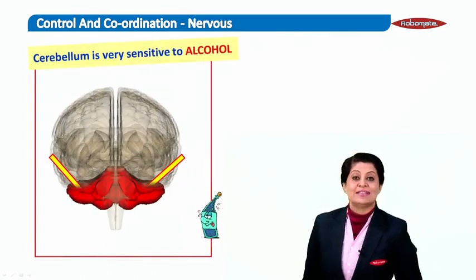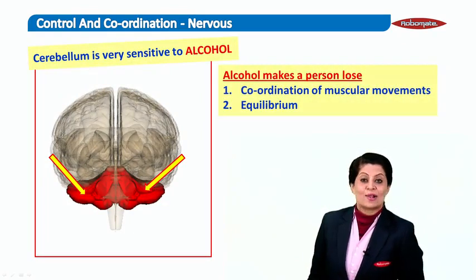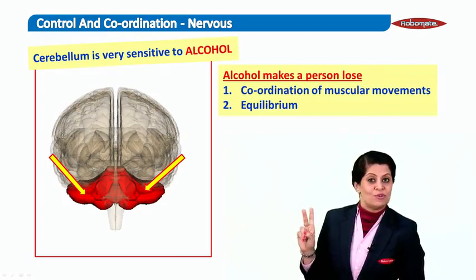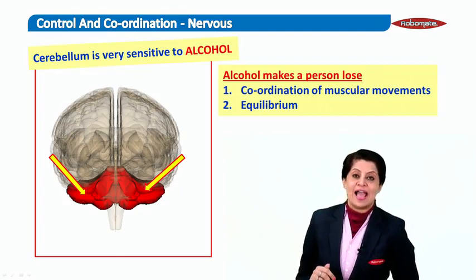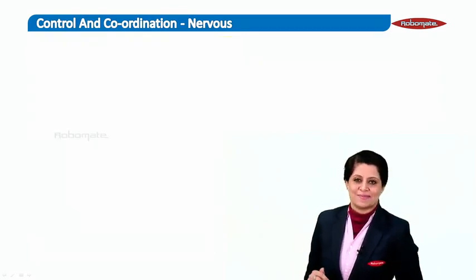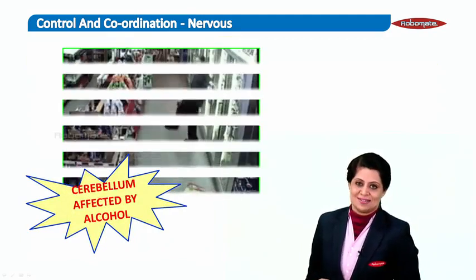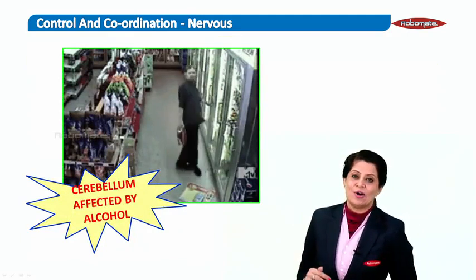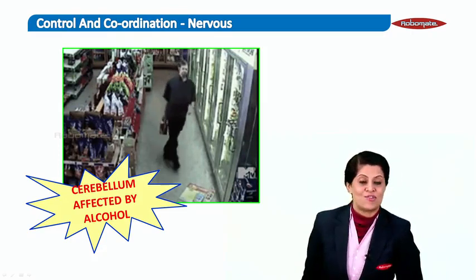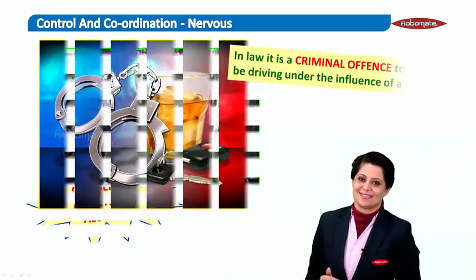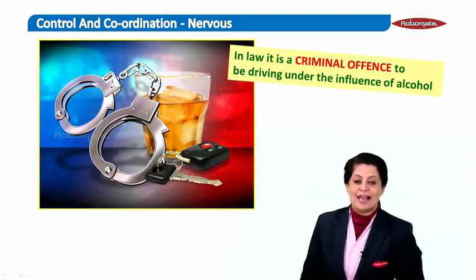The cerebellum is highly sensitive to alcohol. Alcohol causes a person to lose the two important functions of the cerebellum: coordination of muscular movements and equilibrium. When the cerebellum is affected by alcohol, there is loss of equilibrium and coordination of muscles. In law, it is a criminal offence to be driving under the influence of alcohol.